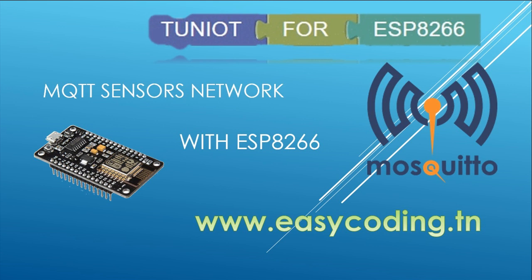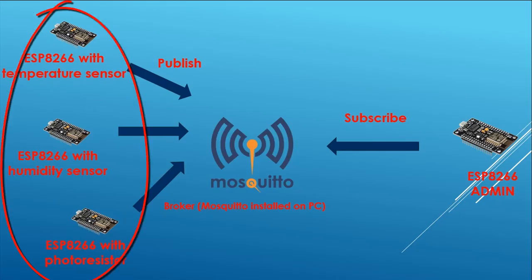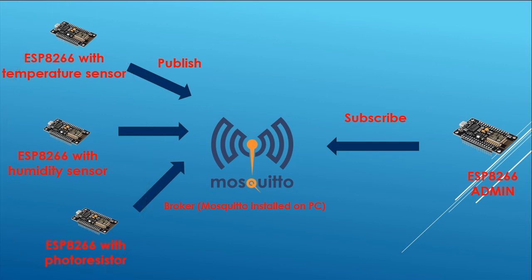Today we will see how to make a sensor network where your ESP8266 communicates with the MQTT protocol. In the last two videos we covered basic concepts of MQTT and made two boards communicate together. In my case I have three sensors: a photoresistor, humidity, and temperature sensor, each one connected to a board. You can have more sensors of course.